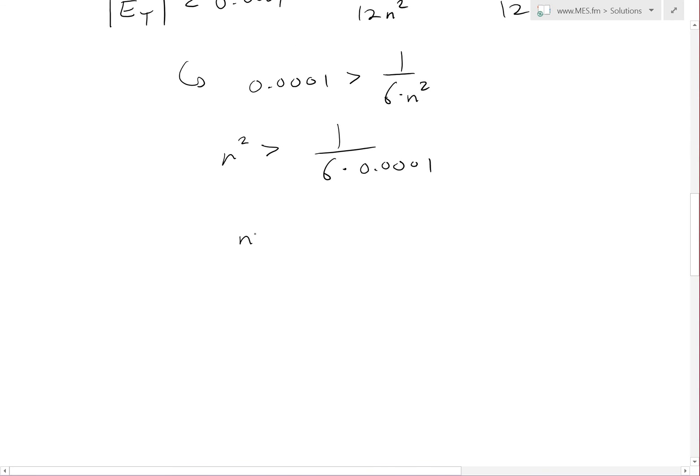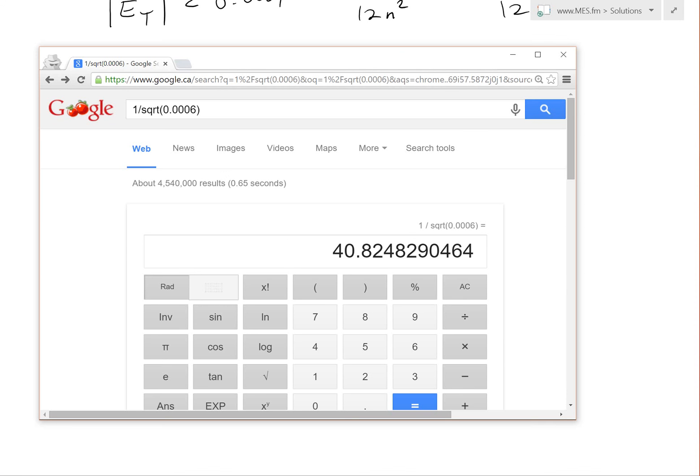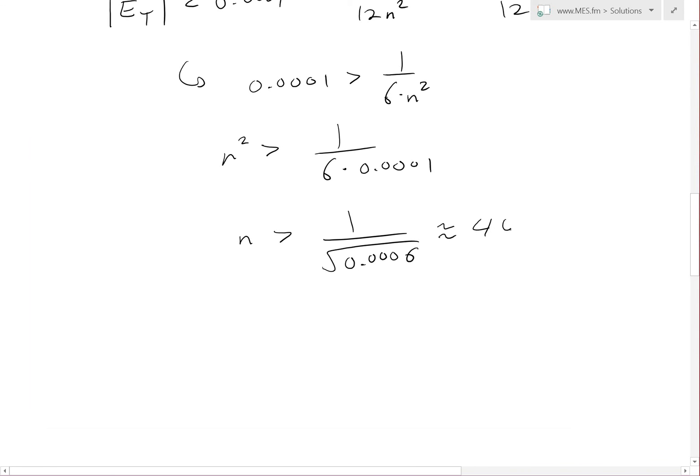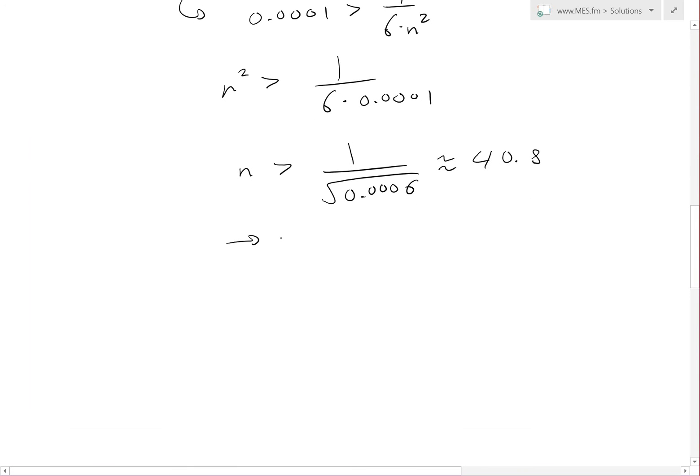Square rooting both sides, n > 1/√(0.0006). We ignore the minus side because n makes no sense if negative. This equals 40.82 when you plug into the calculator, roughly 40.8. Since n has to be a whole number, we choose n equals 41.